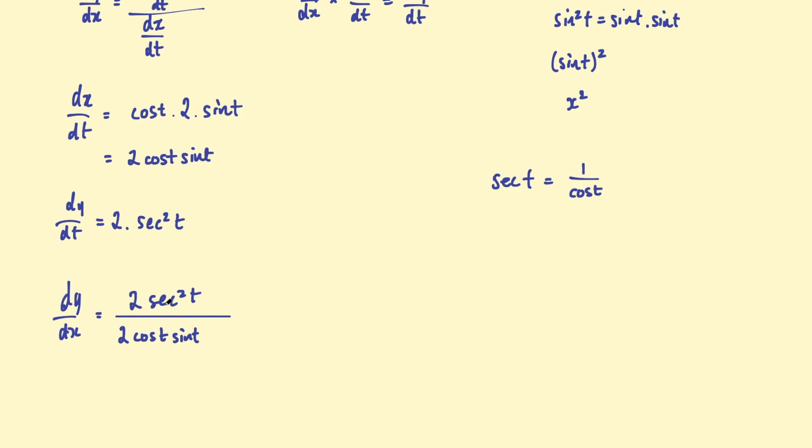So let's go ahead and just simplify this a little bit more. We could also write this as two sec squared t times, well actually, firstly, let's cancel those twos. So multiplying by one over cosine t, and then multiplying by one over sine t.